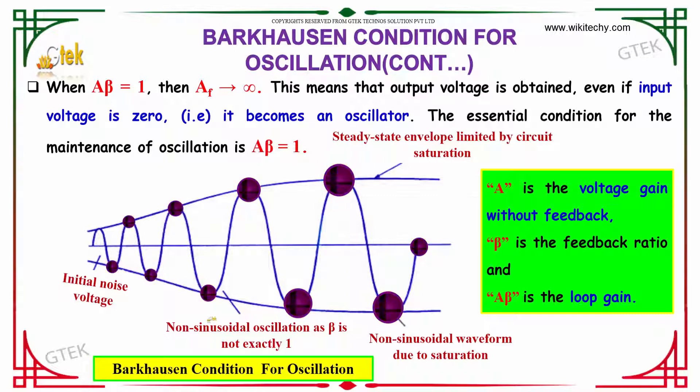This is the initial noise voltage and this is non-sinusoidal oscillation as beta is not exactly 1, and this is non-sinusoidal waveform due to saturation.